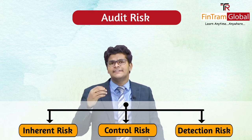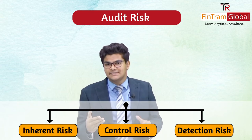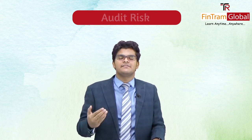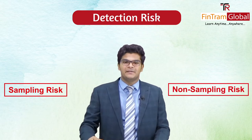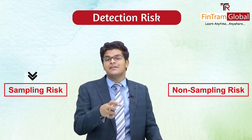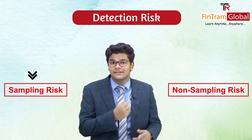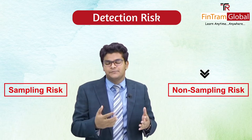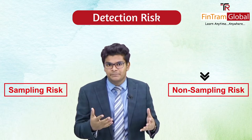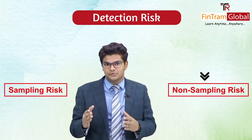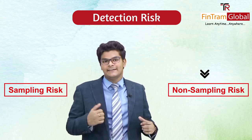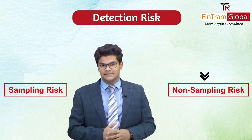And then we finally have detection risk. Detection risk is basically the risk that some of the errors within the financial statements may go undetected by the auditors. This can be caused by two other risks: sampling risk or non-sampling risk. Sampling risk is the risk that the samples selected for testing may not be representative of the entire population. Non-sampling risks are those other than sampling risk — for example, if the audit client is a new client and we haven't planned enough procedures to gather sufficient and appropriate audit evidence, chances are our audit opinion would be incorrect.